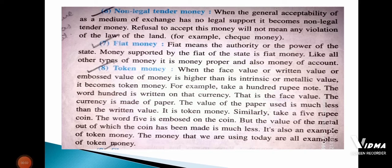Good morning students. Today we will discuss the rest of the types of money. First, non-legal tender money. In the previous class we discussed legal tender money — that is money which has general acceptability, accepted by one and all, and has the support of the law of the land. The government has given its approval on that piece of paper to be called money. All the currency notes we have today are legal tender money.